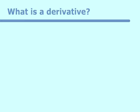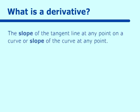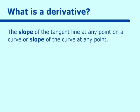What is a derivative? The definition is the slope of the tangent line at any point on a curve, or the slope of the curve at any point. We've been looking at tangent lines, and we're also going to start looking at curves.